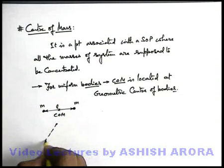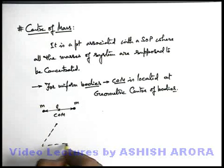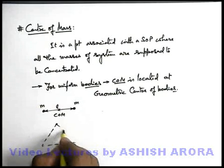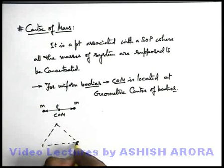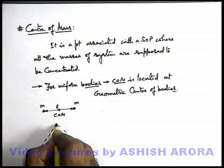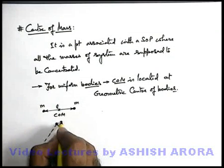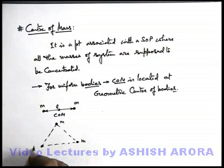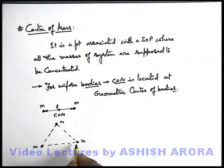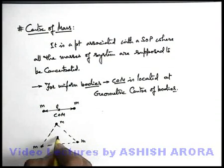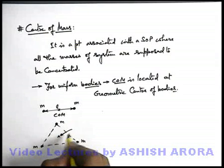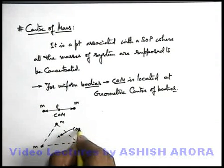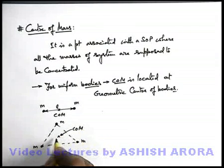So the centre of mass of this system is located at the midpoint of the two objects. Similarly, say we are having an equilateral triangle, and at each of the vertices of the equilateral triangle, identical masses m are placed. So again by symmetry we can state the centre of mass will be located at the centroid of this triangle.